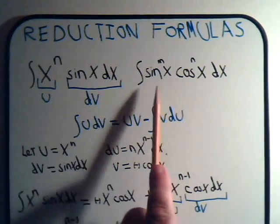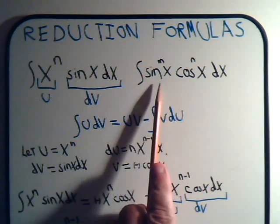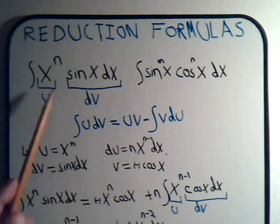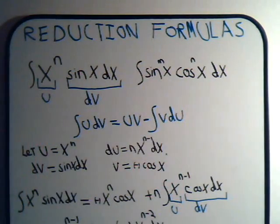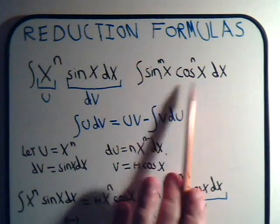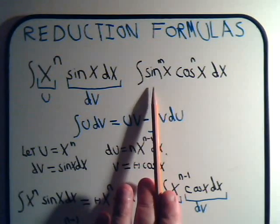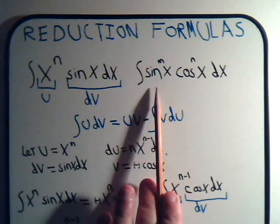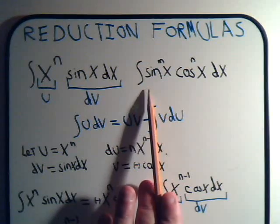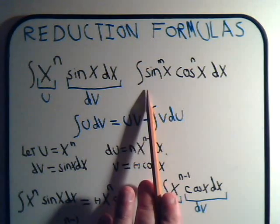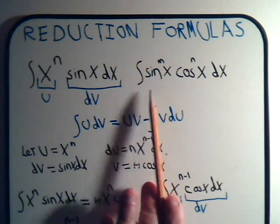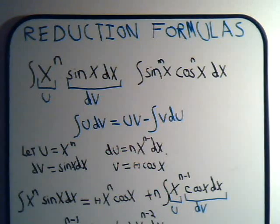Deriving it for the more complicated integral — sine to a power times cosine to a different power — will be a bit more complicated. We used this simpler example to introduce the concept of reduction formulas. That more complex reduction formula is the basis for beta integral functions, and we'll discuss it in the next video.